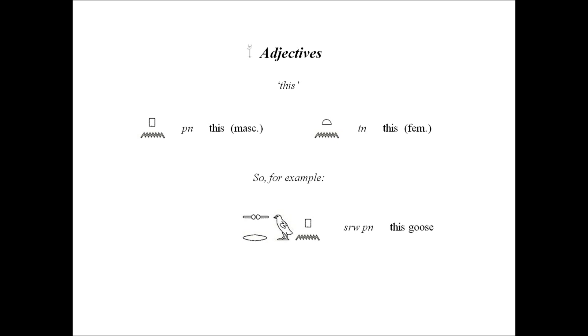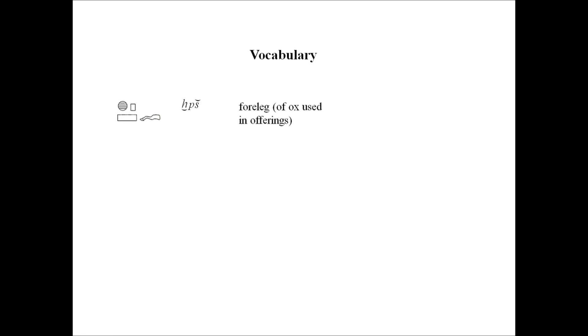Some vocabulary for you to use or learn. H'p'ish is a foreleg of an ox used in offerings. The foreleg is also indicated in the Senbi inscription, showing him holding the foreleg. The word enka'en — that's a transliteration — is for the ka, usually used in prayers or sacred inscriptions.